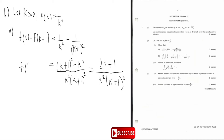So that's the first part of the question: f of k minus f of k plus one equals that. Generally, when you take the difference of two terms, you know that a method of differences question is coming.